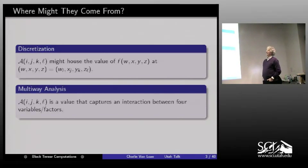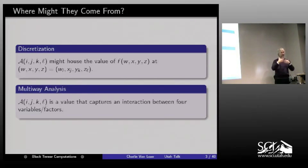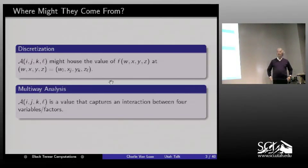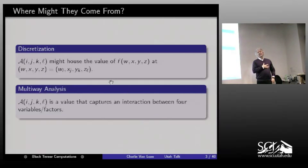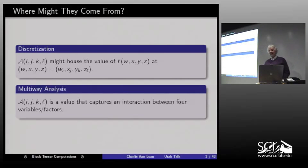Where might tensors come from? All over the place. Maybe you have a function of four variables — the output of some simulation on a grid with samplings of f at each grid point. You could assemble those values into a fourth-order tensor, or the I-J-K-L entry captures some interaction between four variables or factors. Nowadays, people are interested in high-dimensional models because we have so much memory and compute power.